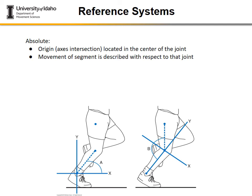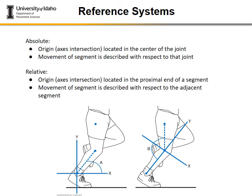To conclude the discussion on reference systems, it's essential to understand that there are many ways to describe a motion, and the way we choose is dependent on the reference system being used. We will go over more about absolute and relative angles in the angular kinematics portion of the class, but these concepts are introduced early when talking about anatomy because they set the groundwork for how we describe motion. Absolute angles are also termed segment angles.